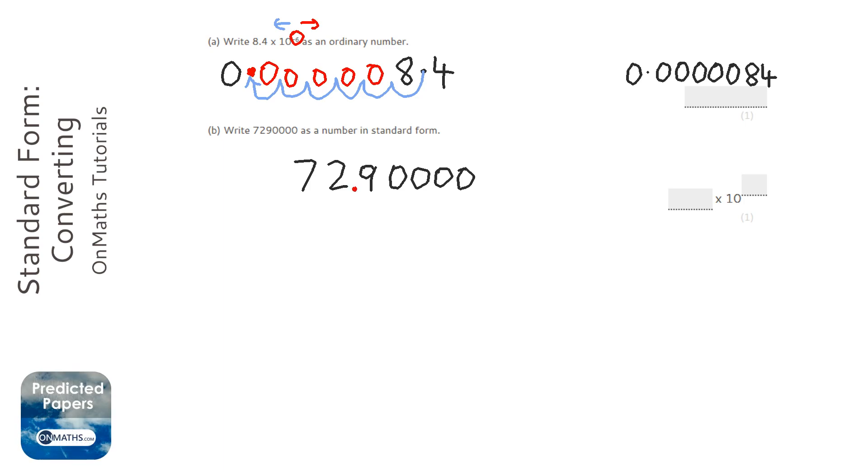So if I put it in here that would be 72 so that would not be right, so I need to put it in here. Then you count how many times you had to move the decimal point to get it there. The decimal point started at the end of the number and we had to move it one, two, three, four, five, six.